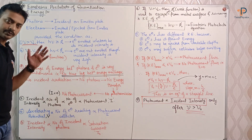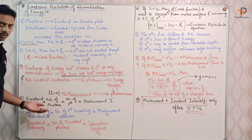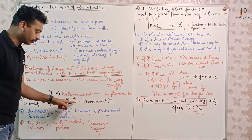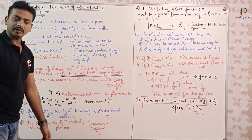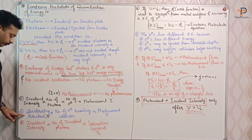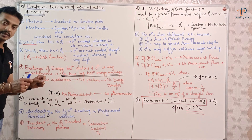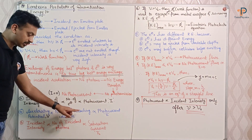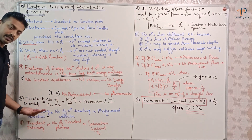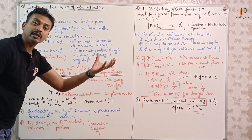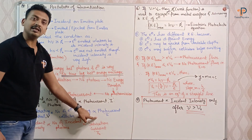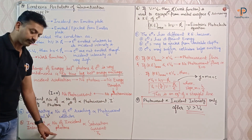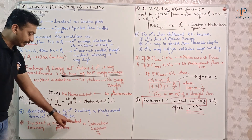The third point: incident intensity is directly proportional to the number of photons. More intensity means more photons, and more photons means more electrons emitted from the plate. So incident intensity is directly proportional to the number of electrons, and therefore directly proportional to the photocurrent. Similarly, incident intensity is directly proportional to the number of incident photons and directly proportional to the saturation current.